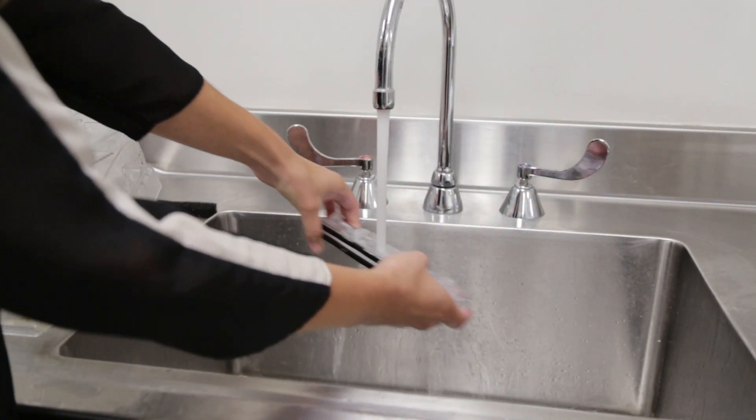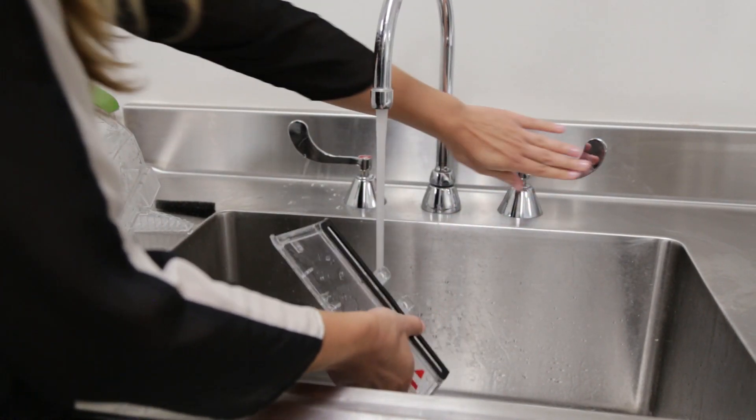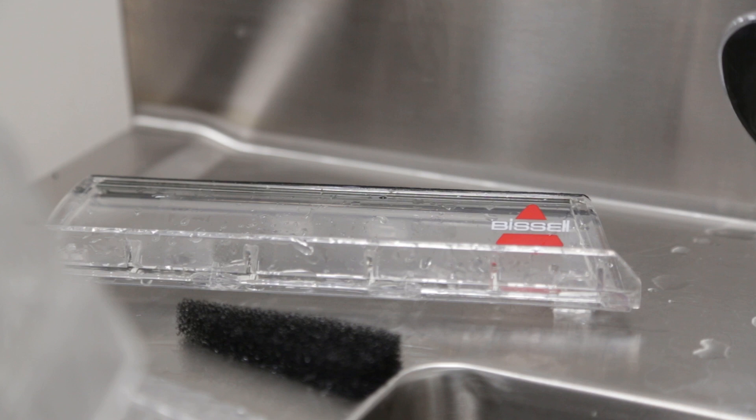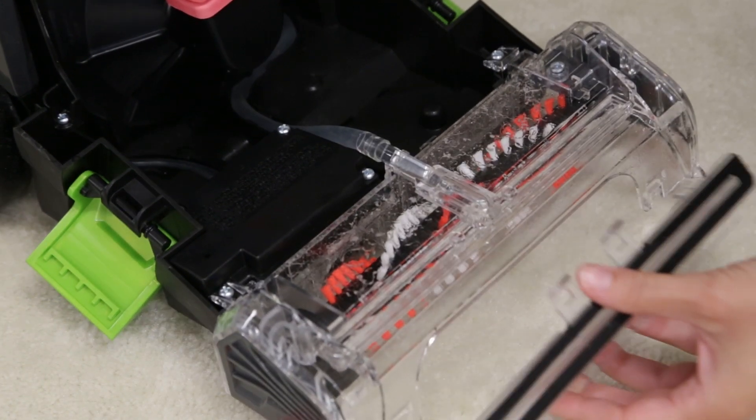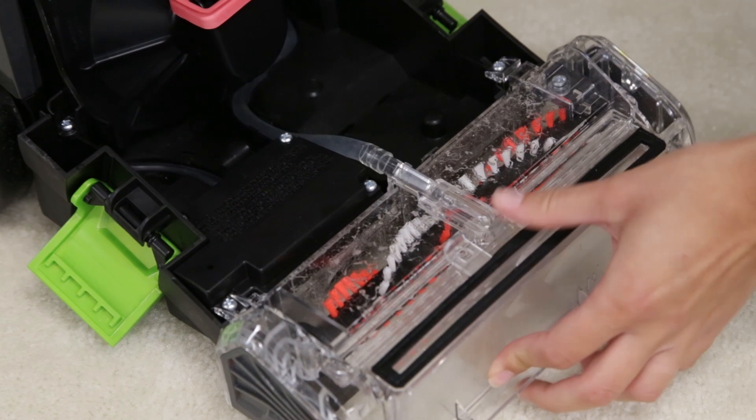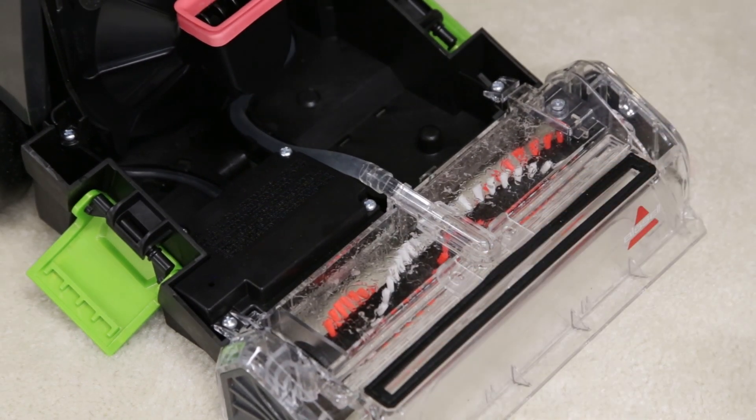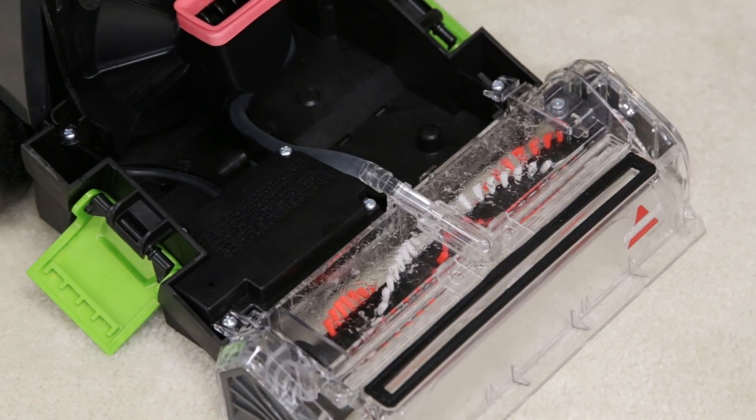Now, rinse the nozzle under running water and set it aside to dry. Once dry, you can reattach the nozzle. Tilt the machine back slightly and align the nozzle hooks to the bottom of the foot. Rotate the nozzle up to click back into place.